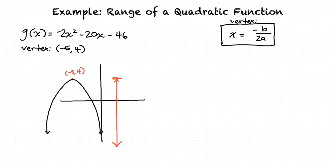Therefore, in interval notation, we write parenthesis negative infinity comma 4 bracket, showing that negative infinity is not included, and 4 is included. This is our final answer.